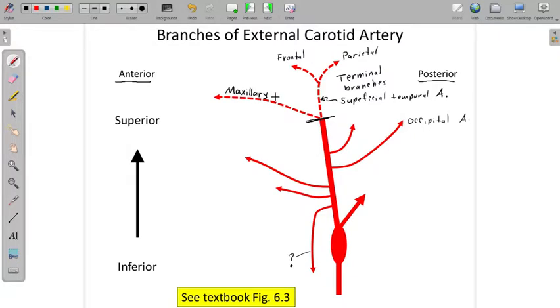It's like an octopus, supplies all of the teeth. But for right now, let's work on the branches of the external carotid. We'll start with the common carotid.